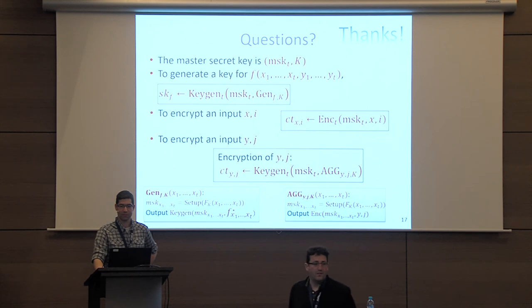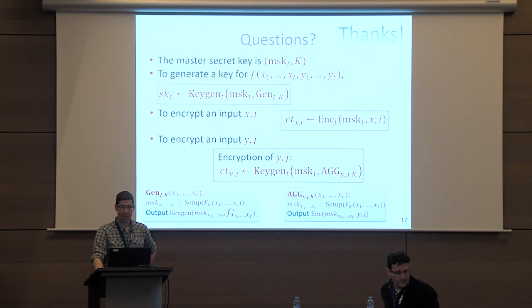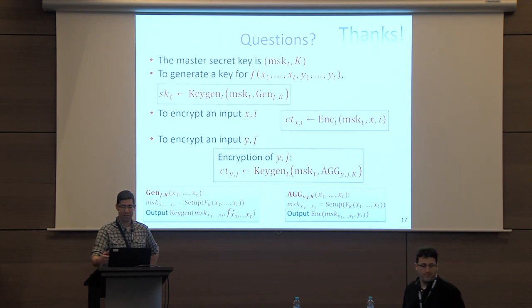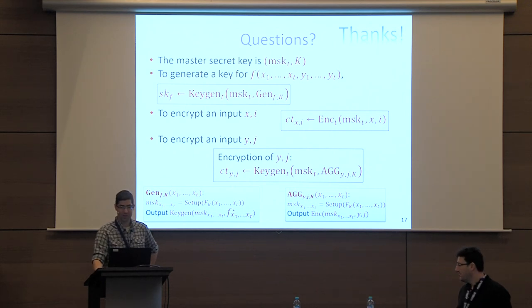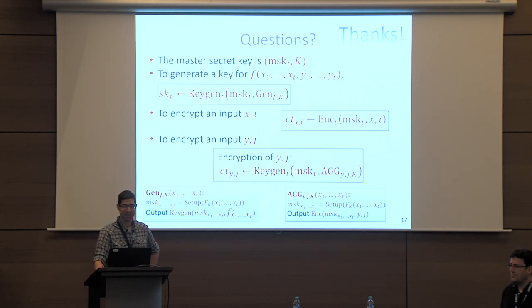Q: You support log^δ inputs — can you explain the limitations that lead to that bound? A: The ciphertext blows up polynomially at every iteration of the transformation, so we cannot apply it too many times. That's basically the reason for that bound.